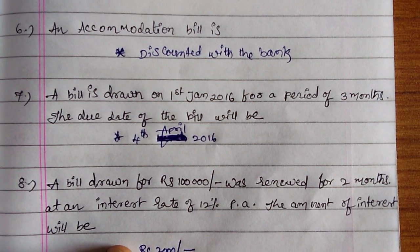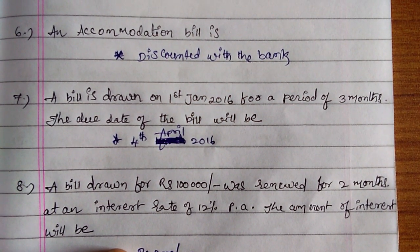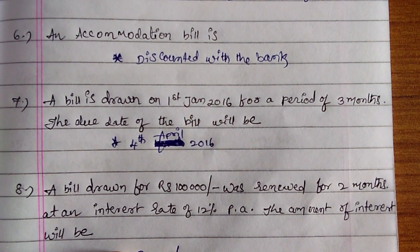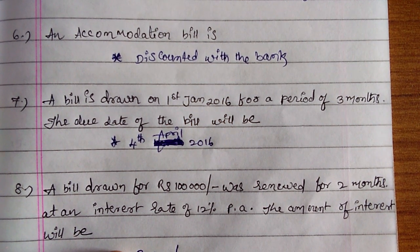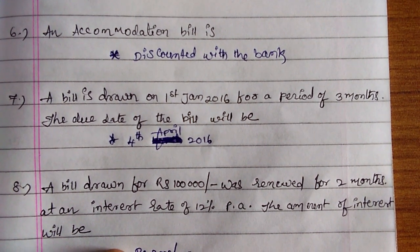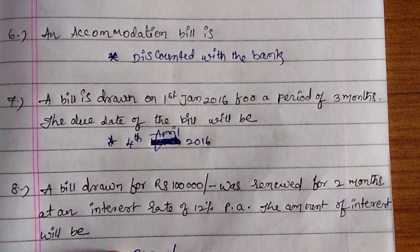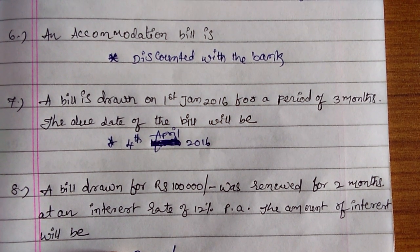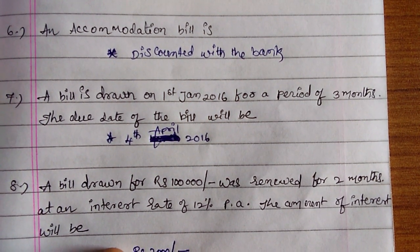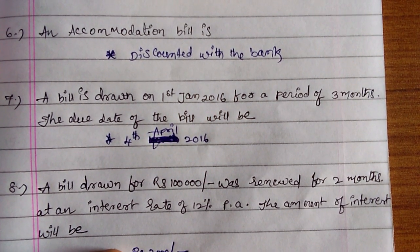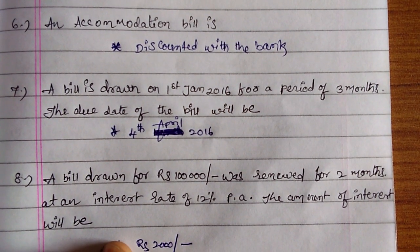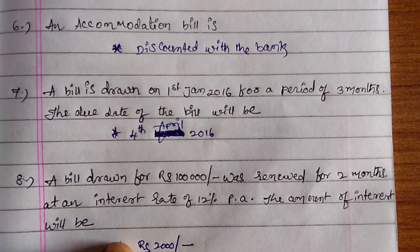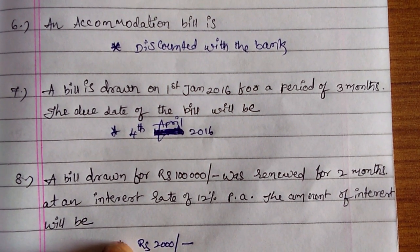Next one: a bill is drawn on 1st January 2016 for a period of 3 months. The due date of the bill will be 4th April 2016, because 1st January plus 3 months plus 3 days grace period gives April 4th.